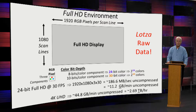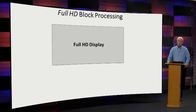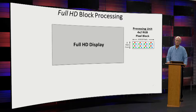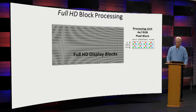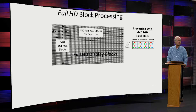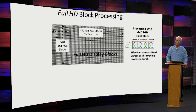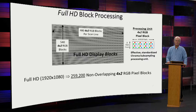So let's hop right into full HD block processing. We take our full HD display and divide it up into non-overlapping blocks, 4 pixels wide and 2 pixels high. In a row there'll be 480 of these, and in a column 540 of them. Each block is processed independently of one another. For full HD at 1920 by 1080, we have about 259,000 of these blocks on screen.